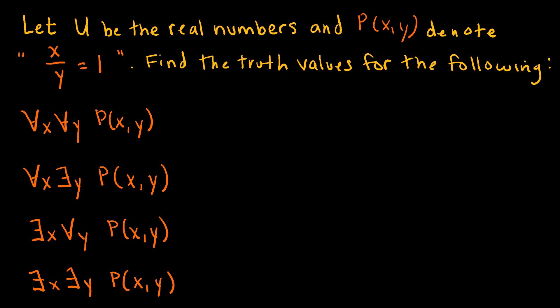I'd like you to try these questions yourself first — press pause, try all four questions, then press play to see how you did. For this question, we're dealing with the universe of real numbers and letting p(x,y) denote x divided by y equals 1. The first statement: for all x's and for all y's, x divided by y equals 1. This is false, because that's saying I can choose any x and any y and always end up with 1 — and that is not true.